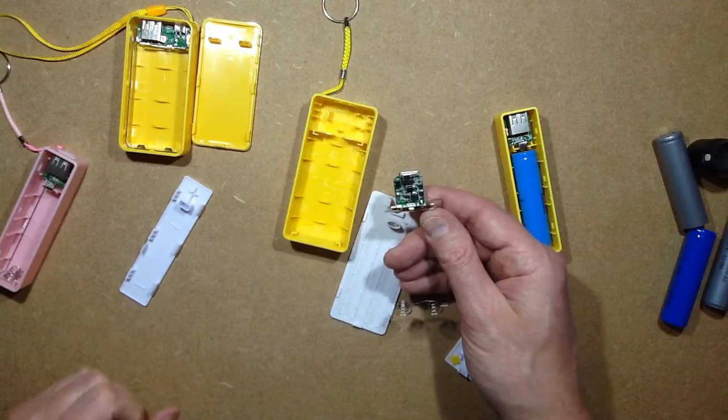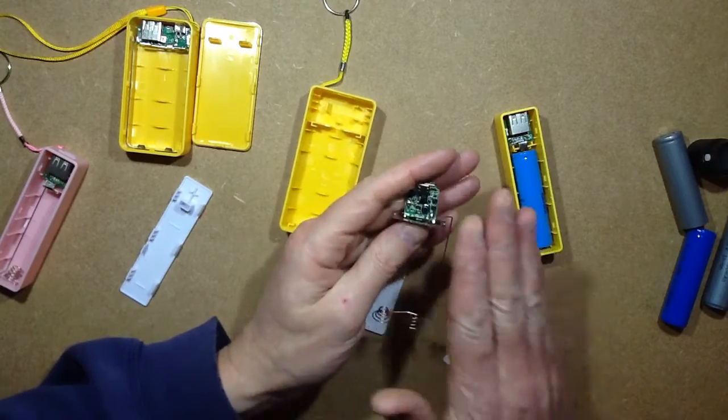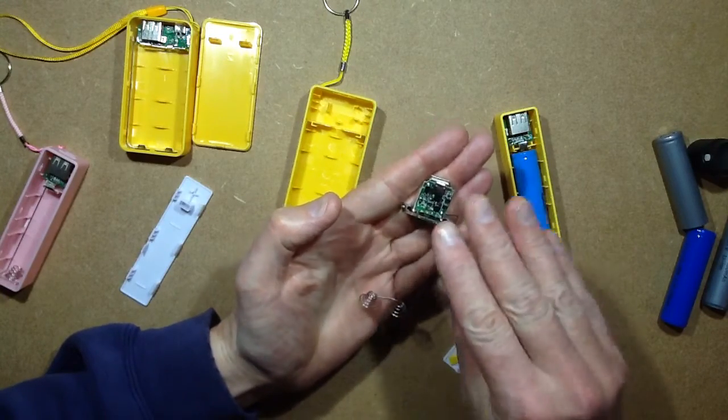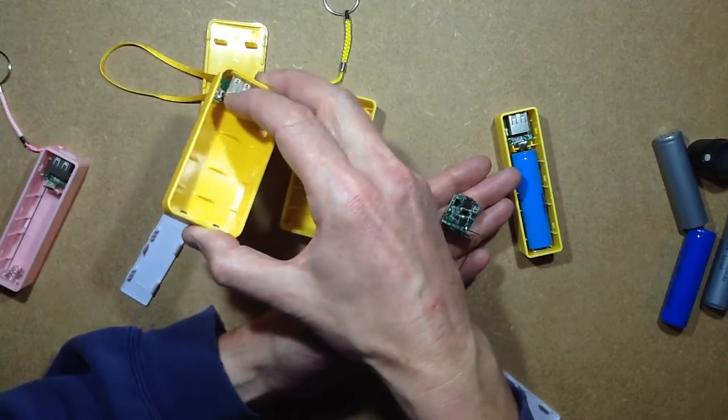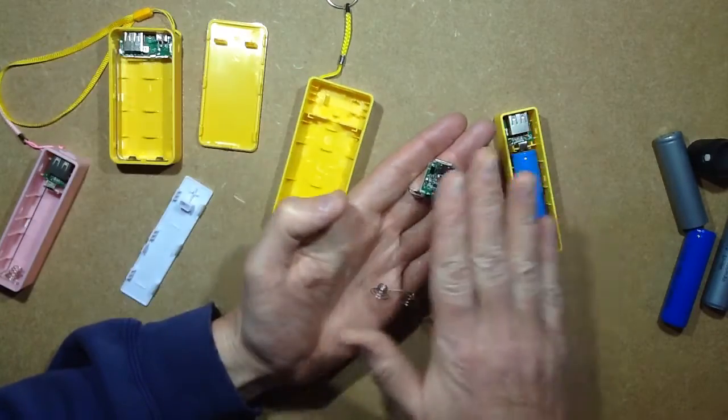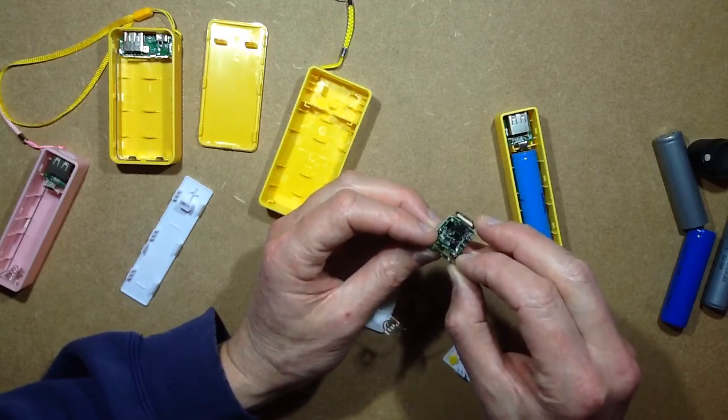So there's a possibility that this one may actually not just protect up to the 4.2-volt charging threshold like this one does. This one may properly turn it off completely when it charges down to about 3 volts.